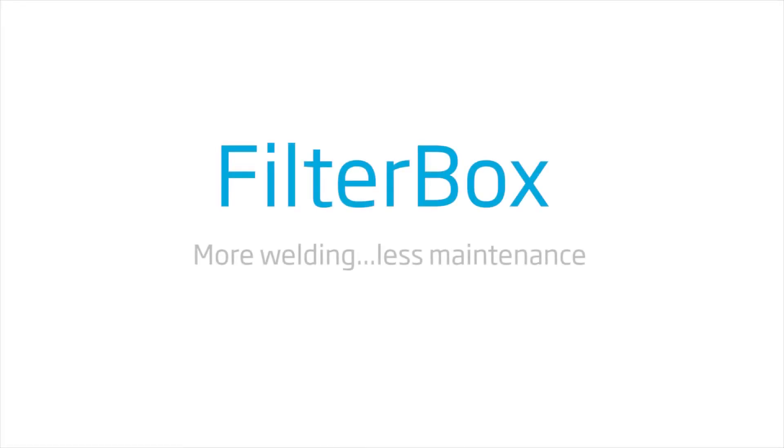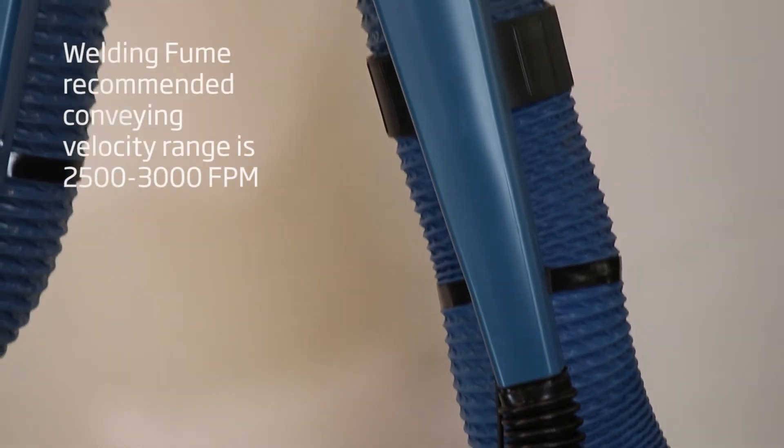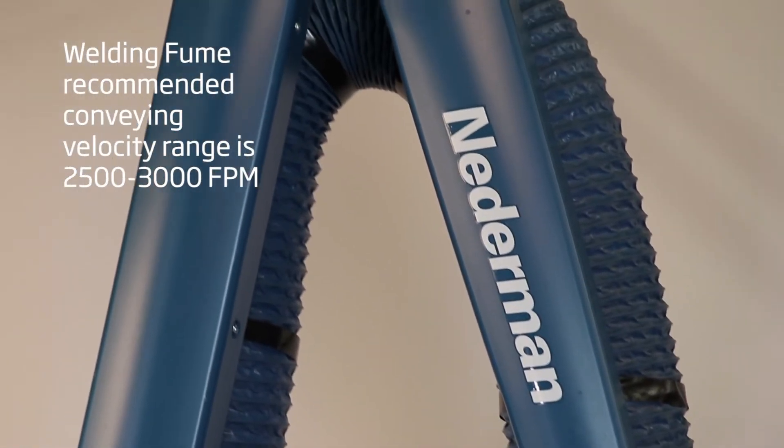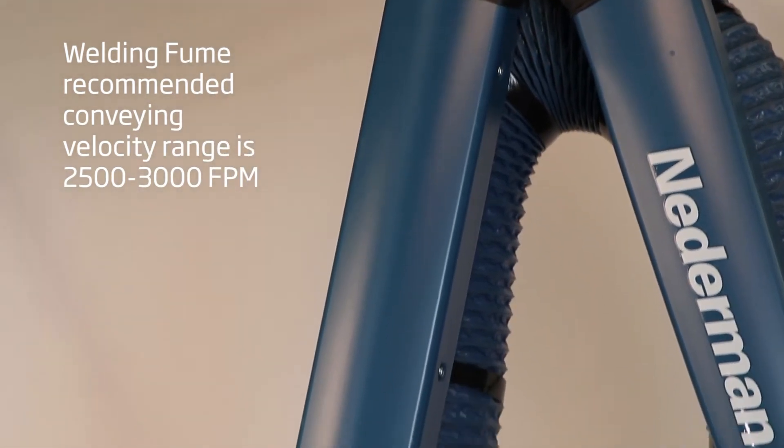Denderman's goal is to make your workplace both clean and efficient. The dirty air travels from the arm to the inlet of the filter box at a velocity of around 2,500 to 3,000 feet per minute. This velocity reduces the chances of fume settling inside the extraction arm.